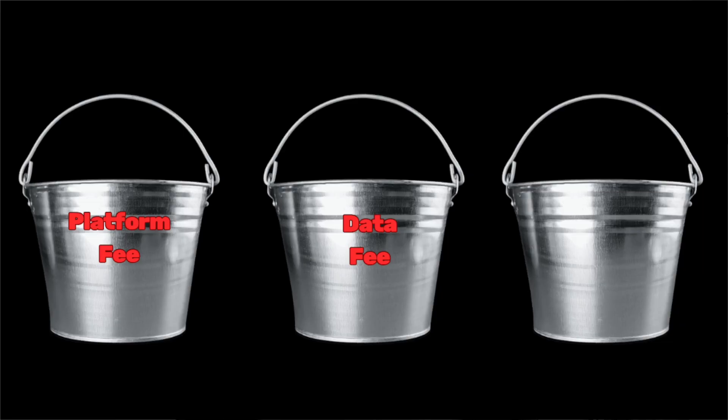Bucket two is data fees, and even though I call this bucket two, it can be significant — it can actually be a larger portion of your overall costs than the tech fee. One of the first things to ask yourself is: if you're paying a data fee to the DSP, who is it actually going to? Is it you paying the DSP for access to the DSP's own data, or are they just acting on behalf of a third party that has proprietary data? If it's the latter, one thing to watch out for is whether the DSP is making a markup on that data. In some cases they may just be passing through costs, or they may be charging some kind of markup on top, so those are important questions to ask.